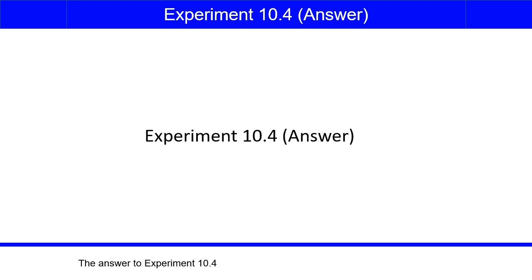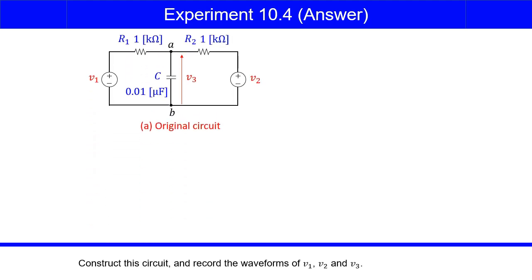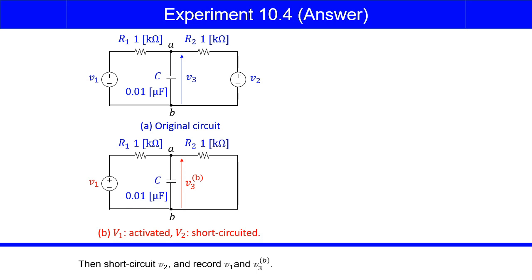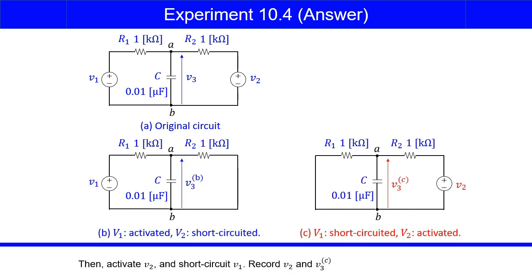The answer to experiment 10.4: Construct this circuit and record the waveforms of V1, V2, and V3. Then short-circuit V2 and record V1 and V3B. Then activate V2 and short-circuit V1. Record V2 and V3C.